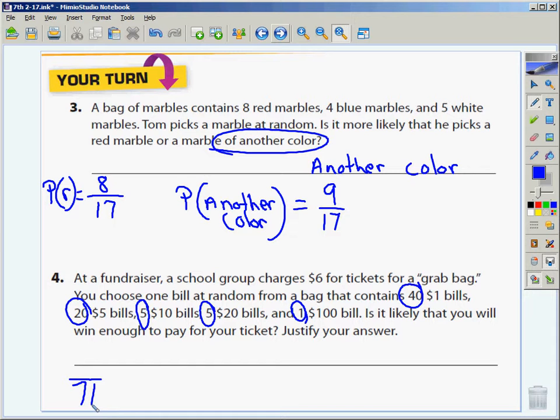It says, is it likely that you'll win enough to pay for your ticket? How much was the ticket? Six dollars. So I've got to look at the bills that have a value greater than six dollars. There are five ten dollar bills, I can count that. I can count five twenty dollar bills. I'm up to ten bills, right? And one hundred dollar bill. There's eleven bills that I could pick from.